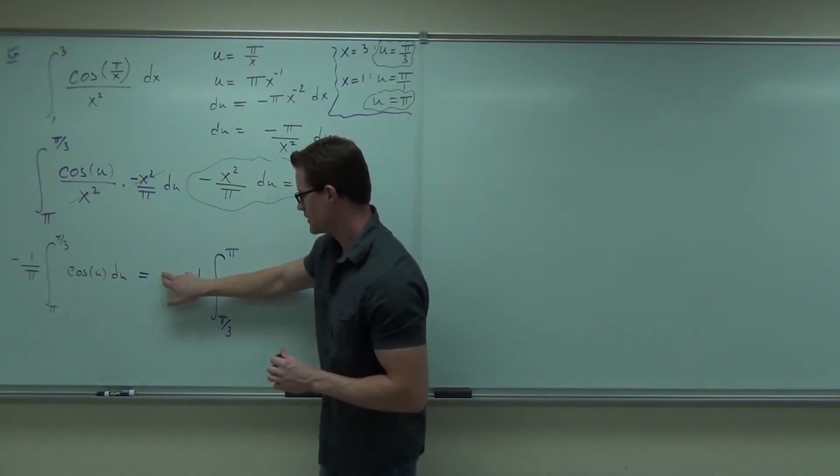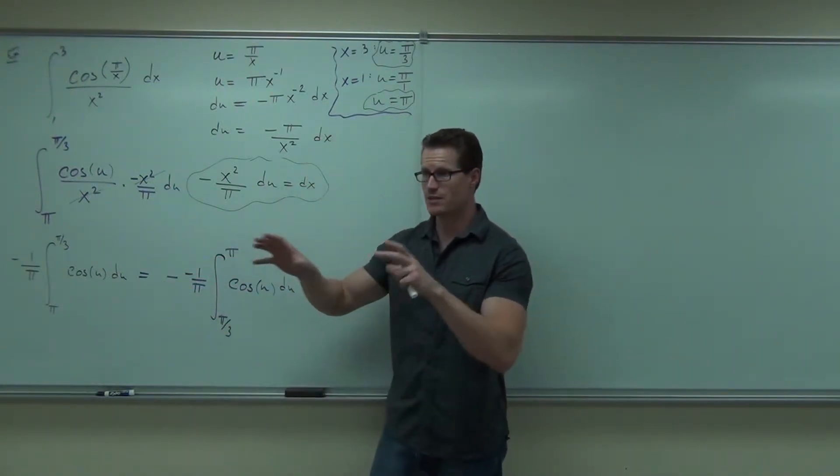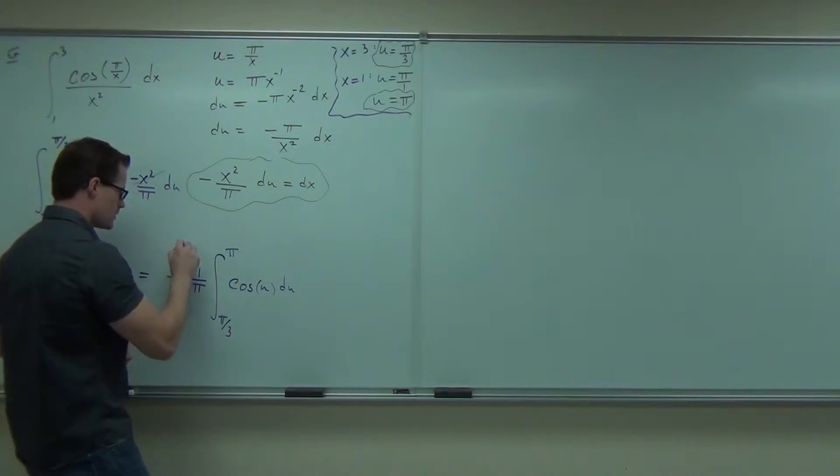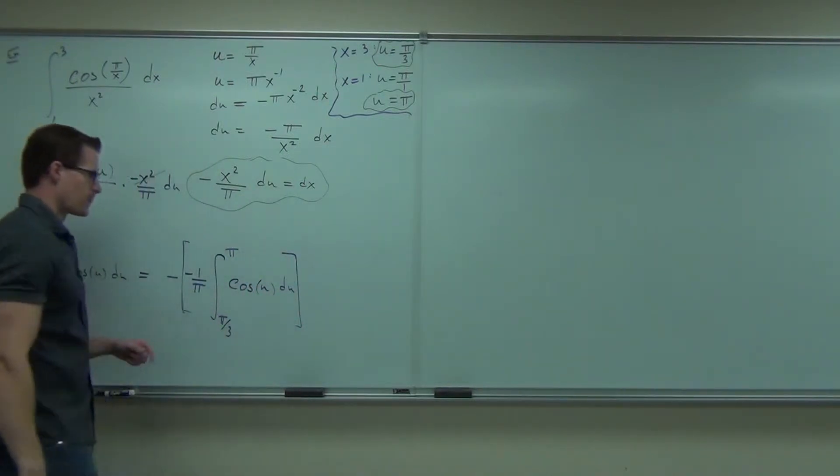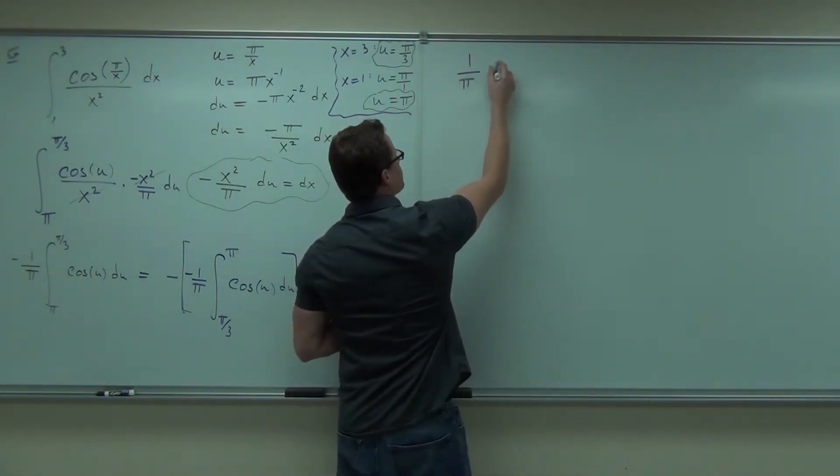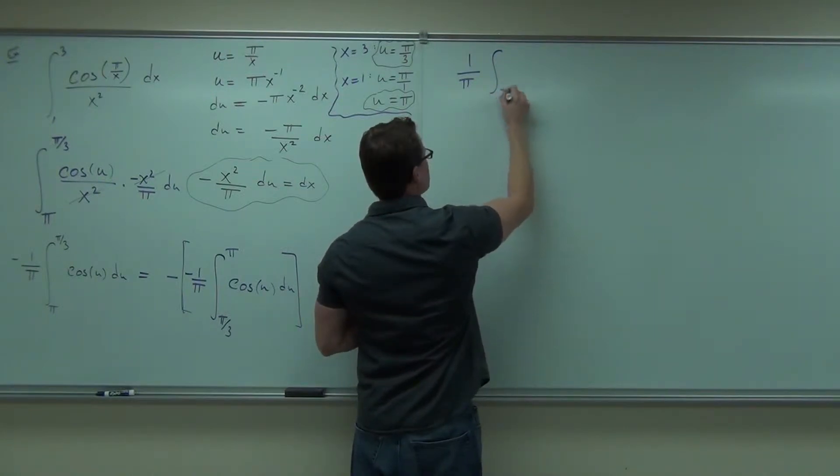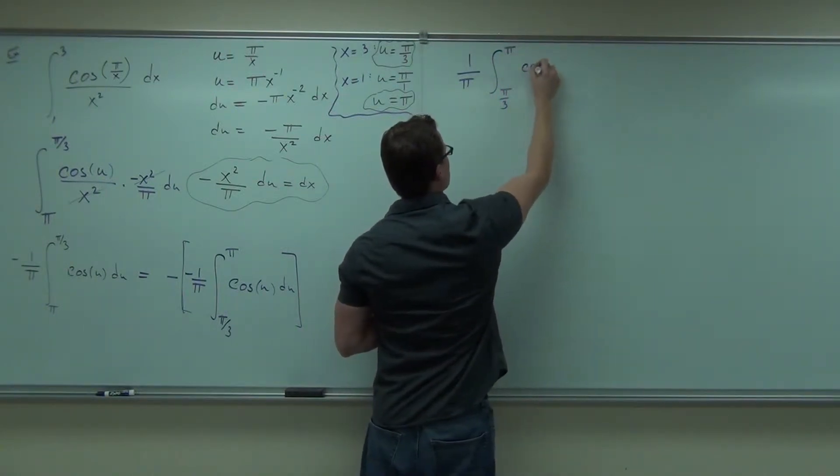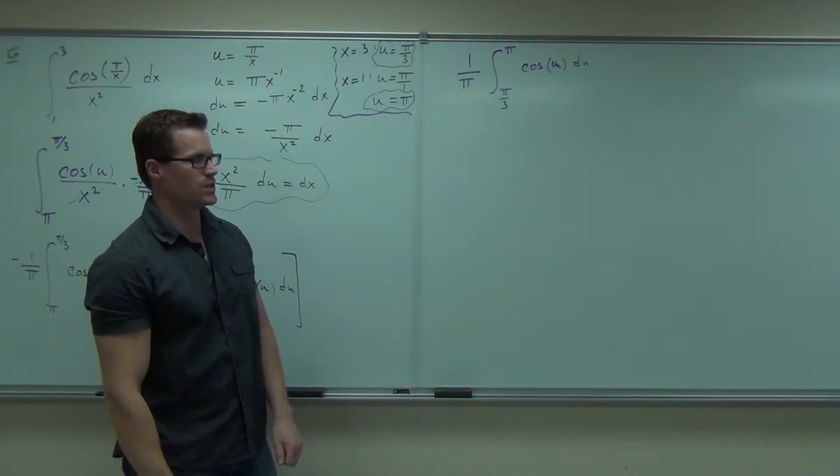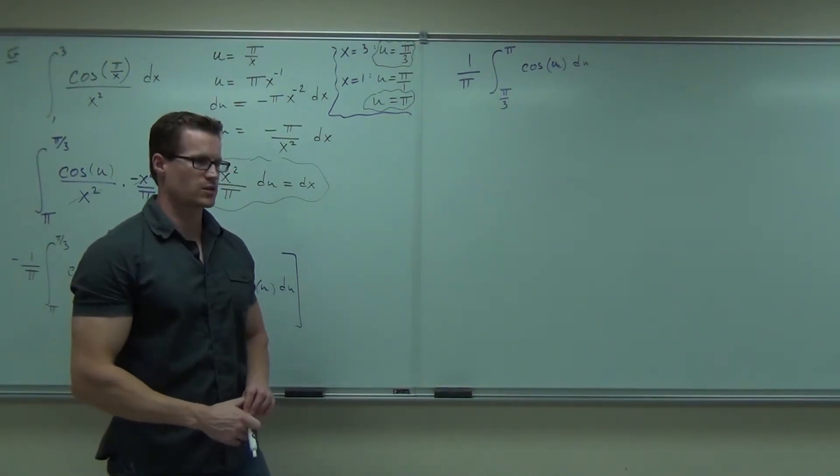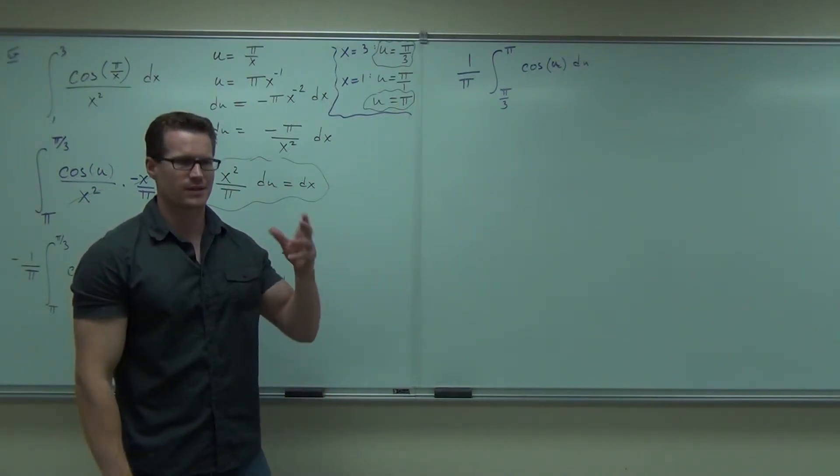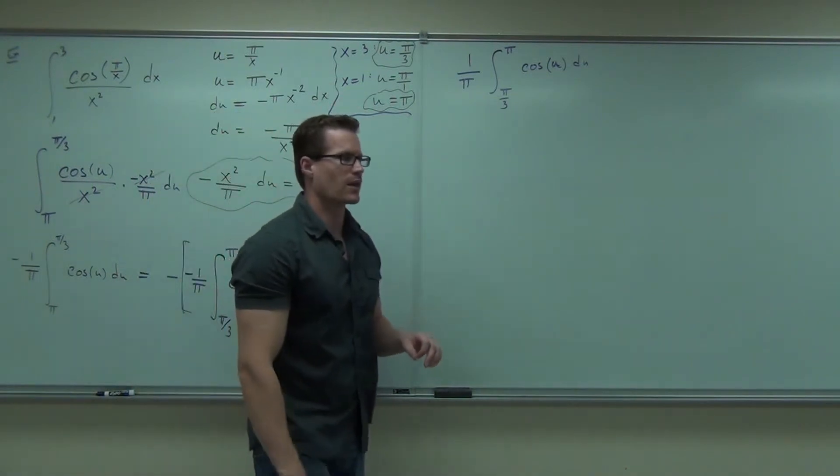Cosine u du. That negative negative is going to change. That's going to become a positive. So we get our one over π from π/3 to π of cosine u du. By the way, it's really nice that we changed bounds here. Because otherwise we'd have to substitute back in for that, and it's a little bit more confusing. You have to figure out a couple things as you're going. It's nice that that's already done for us.